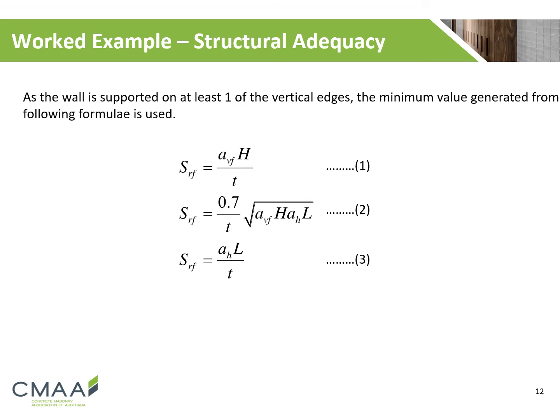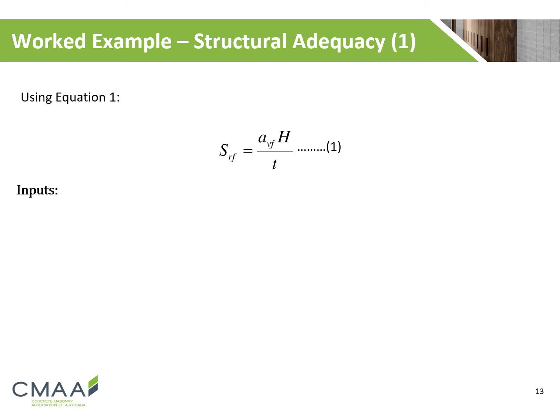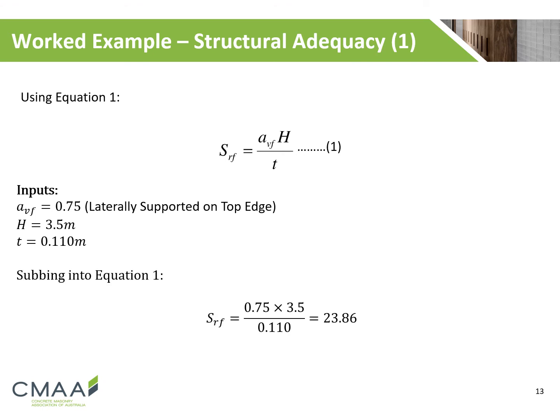The wall is supported laterally on all four edges. As the wall is supported on at least one of the vertical edges, the minimum value generated from the following formulas is used. We firstly evaluate equation 1. As the wall is laterally supported on the top edge, the vertical span coefficient has been specified as 0.75. The height of the wall is 3.5m and the thickness of the wall is 110mm. Hence, we evaluate the slenderness ratio using equation 1 to be 23.86.